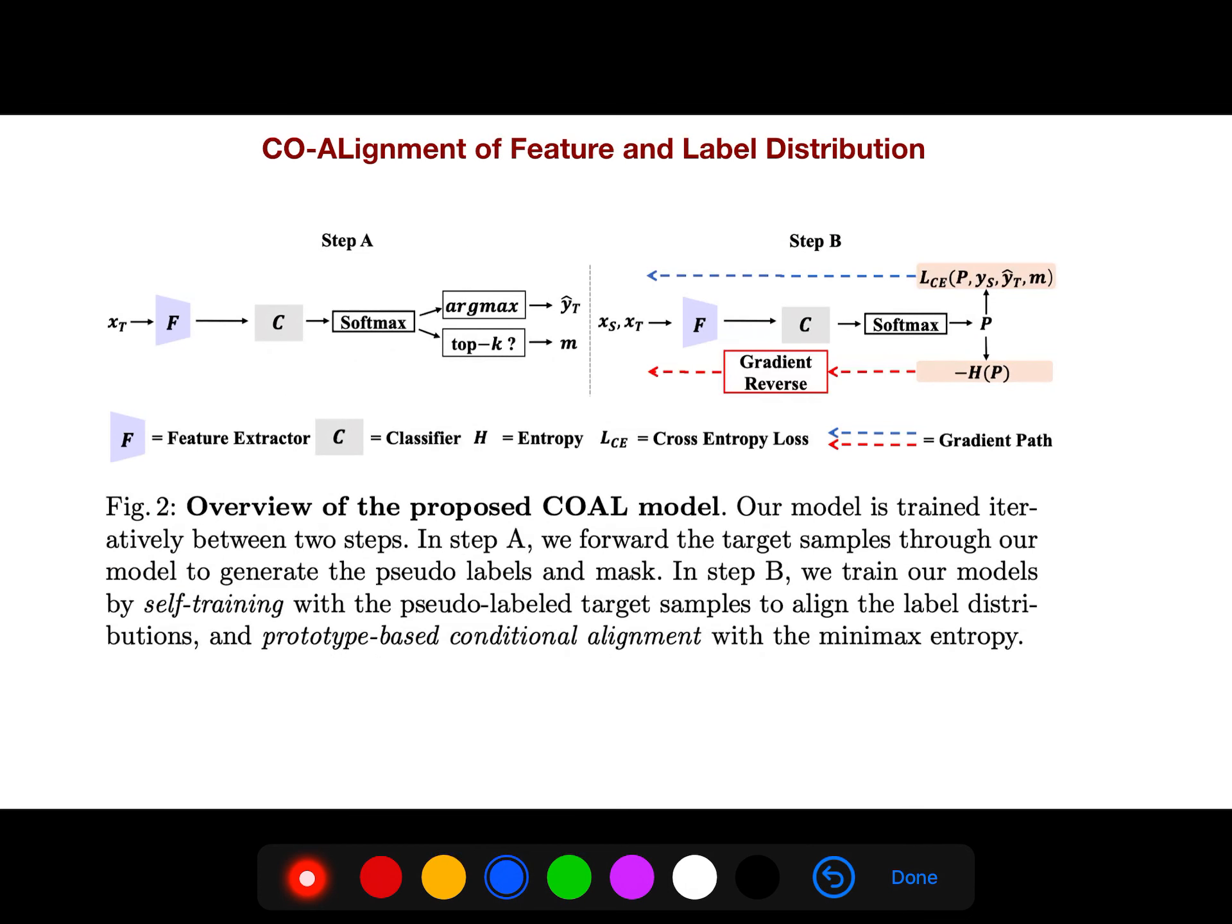So this is an overview. Our model is trained iteratively between two steps. In step A here, you see that we forward the target sample through our model to generate these pseudo-labels and mask. In step B here, we train our models by self-training with the pseudo-label target samples to align the label distribution and prototype-based conditional alignment with minimax entropy.